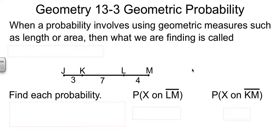This is Geometry, Chapter 13, Section 3, in which we look at geometric probability. We've talked about probability some already. Now we're going to apply it to some geometric ideas.